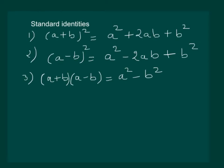And the fourth identity states that (x+a)(x+b) = x² + (a+b)x + ab.